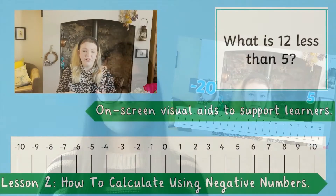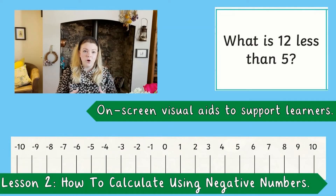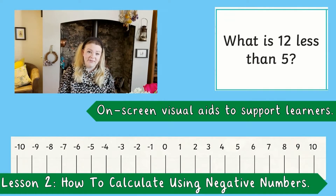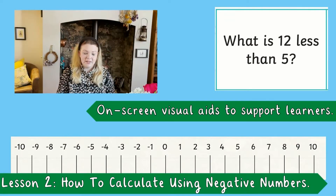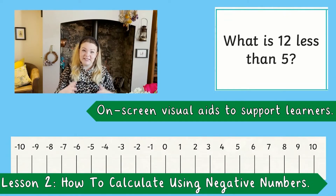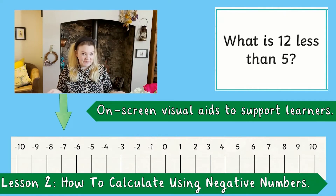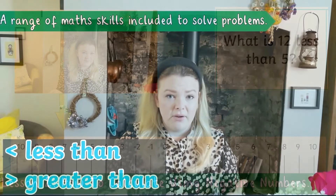In the final lesson, Amy teaches your children how to solve and calculate word problems involving negative numbers. The first one is: what is 12 less than five? Great, you should have put it just here. Can you see it?